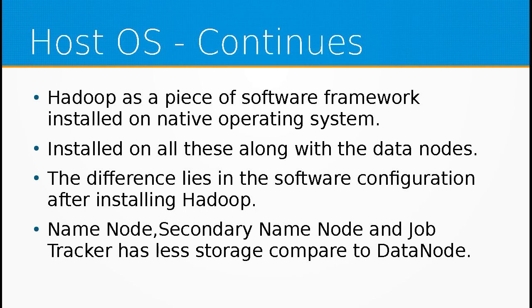It is on this native operating system that Hadoop, as a software framework, is going to be installed. Hadoop would be installed on all these machines — on the NameNode, Secondary NameNode, JobTracker, as well as each one of the DataNodes. The differentiating factor between the machines in master mode and slave mode is the software configuration after installing Hadoop, which enables each machine to perform the responsibilities associated with a NameNode, Secondary NameNode, or JobTracker.